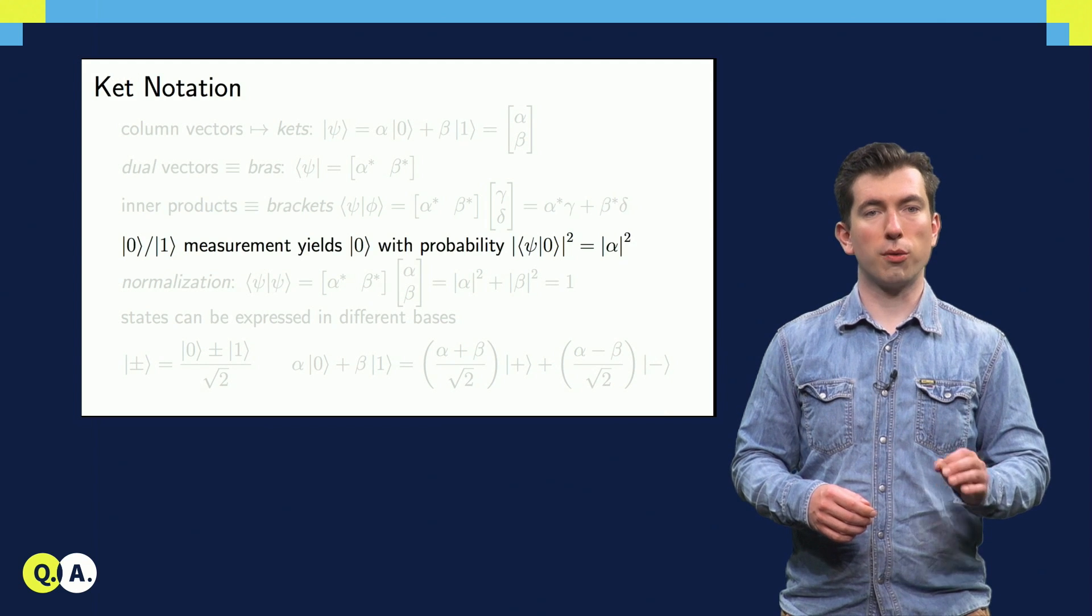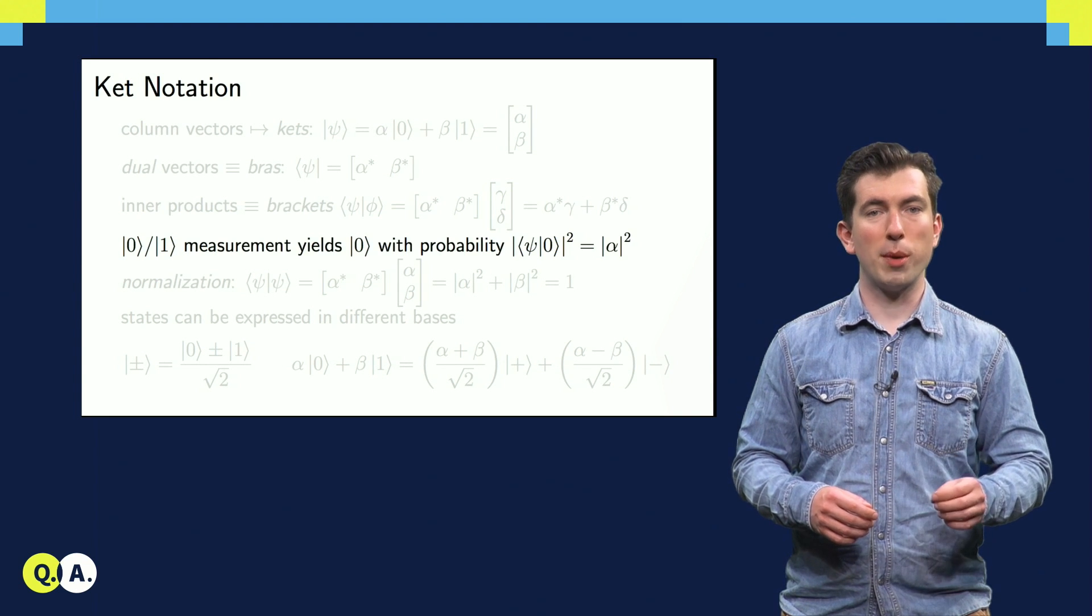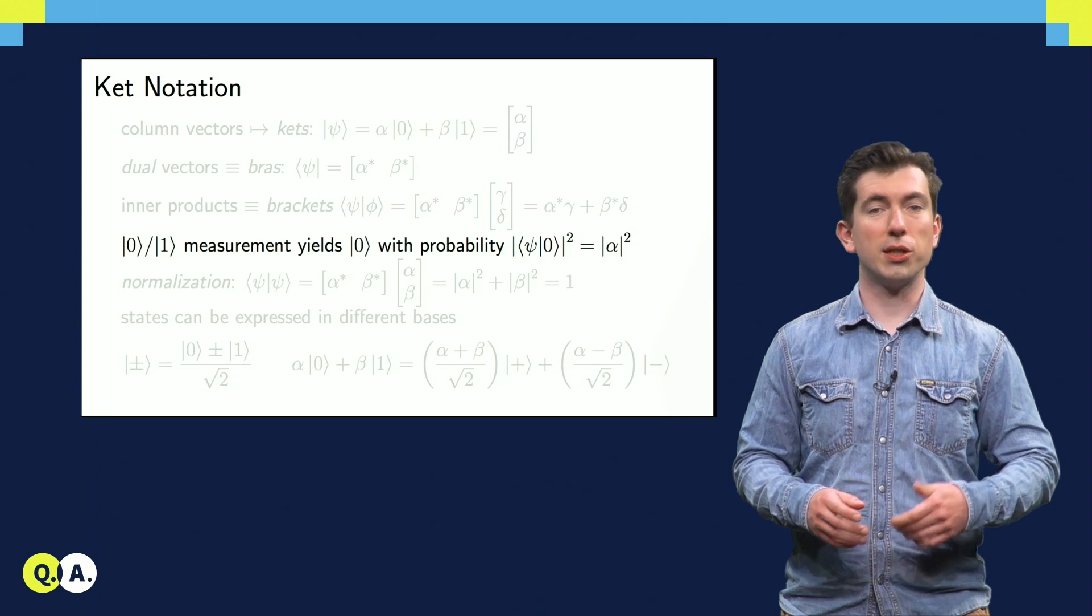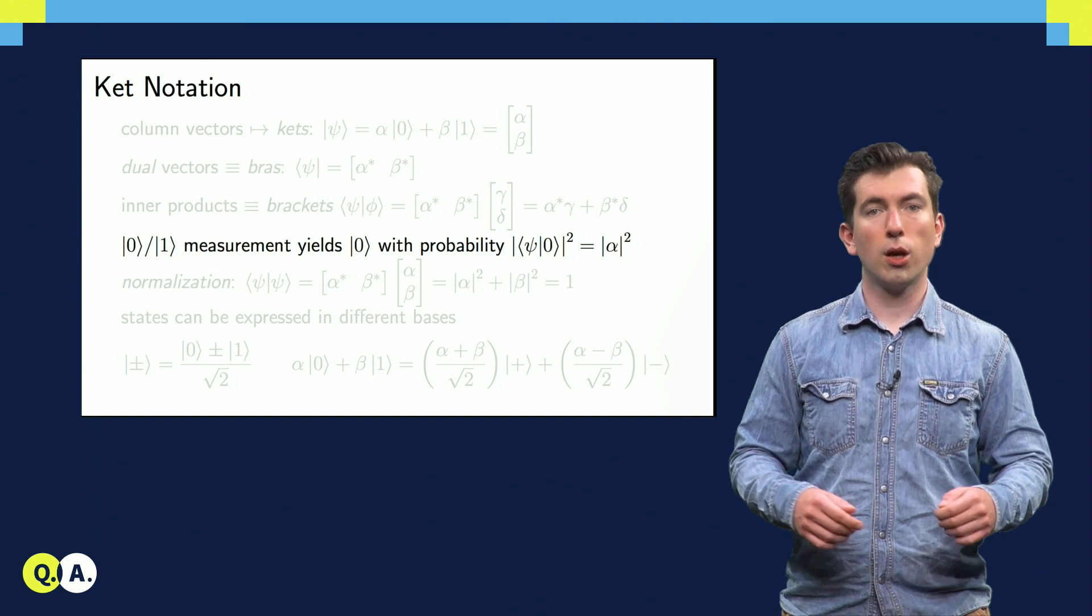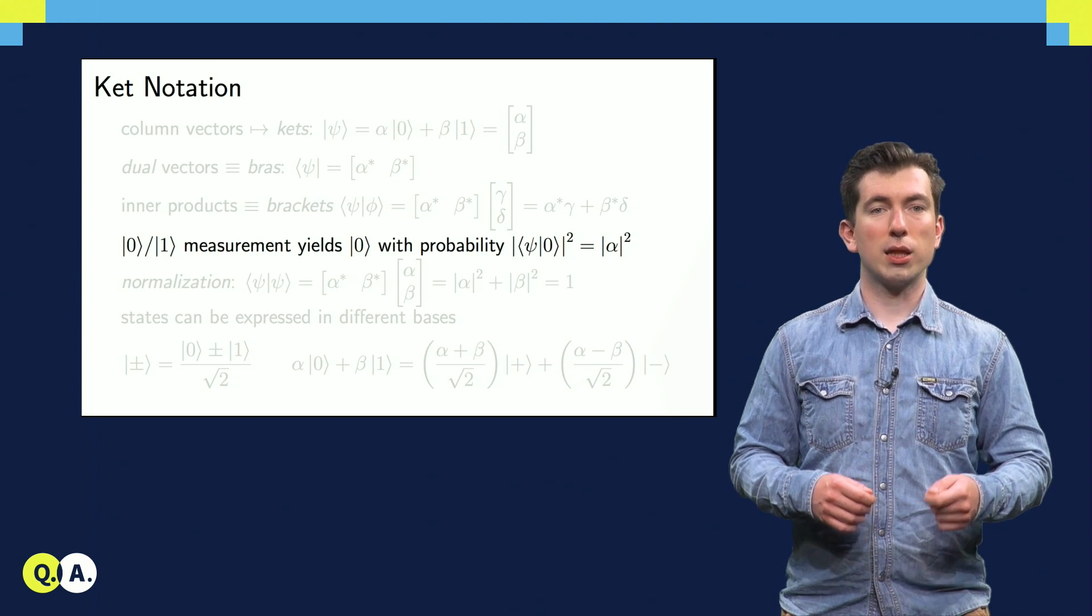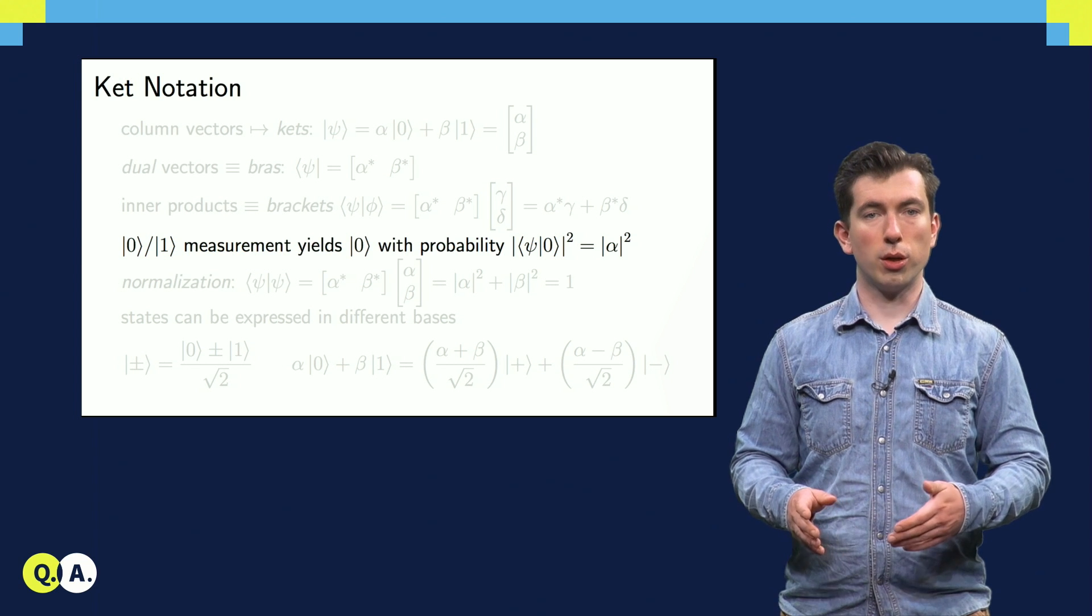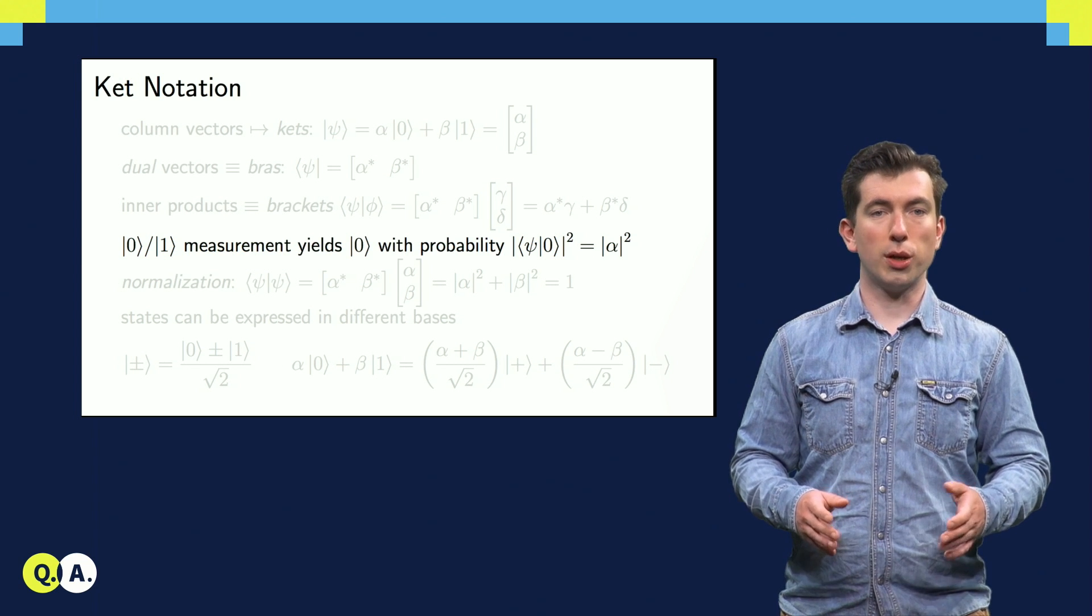A central feature of quantum mechanics is that when we perform a measurement to determine whether a state is 0 or 1, for example, we get a random answer, and the probability of measuring a state to be 0 is given by the squared magnitude of its zero coefficient.